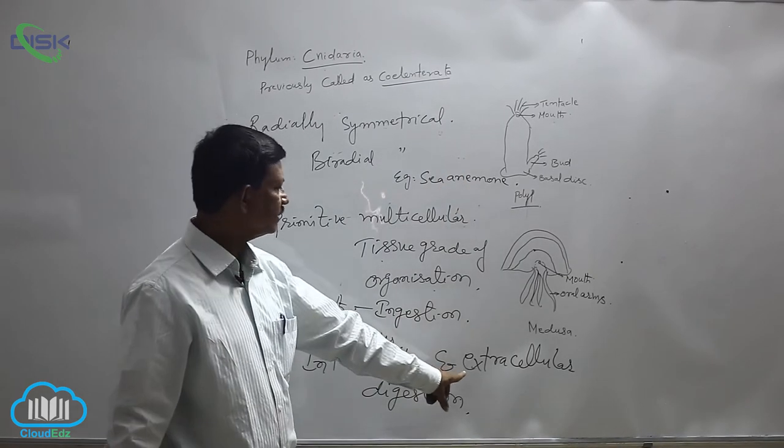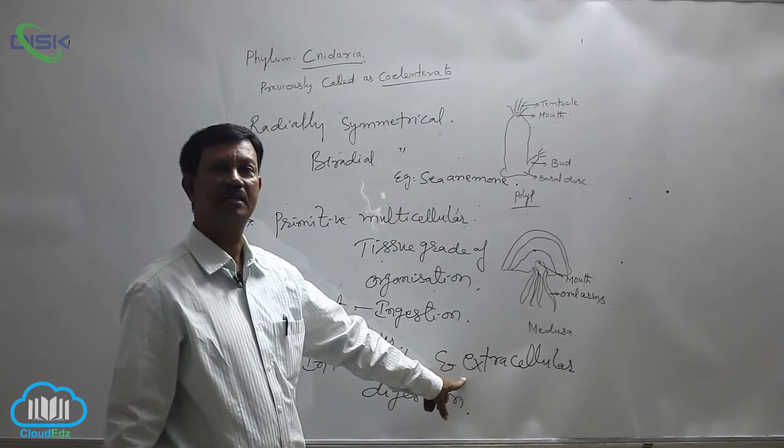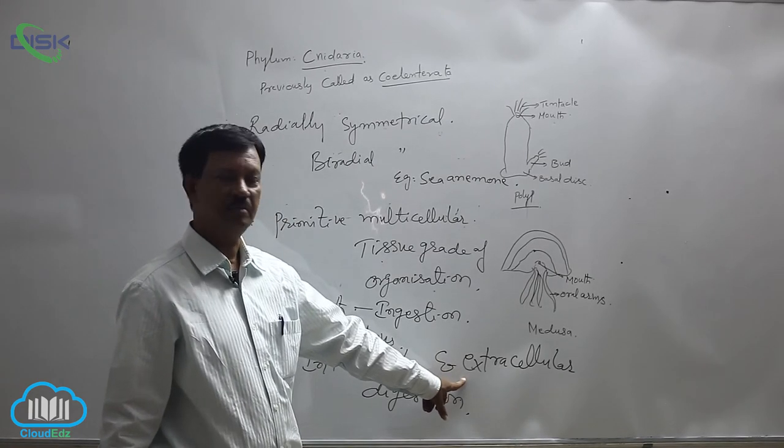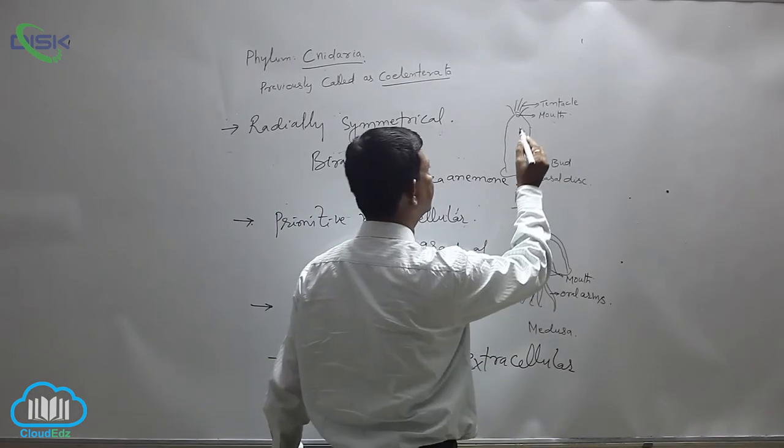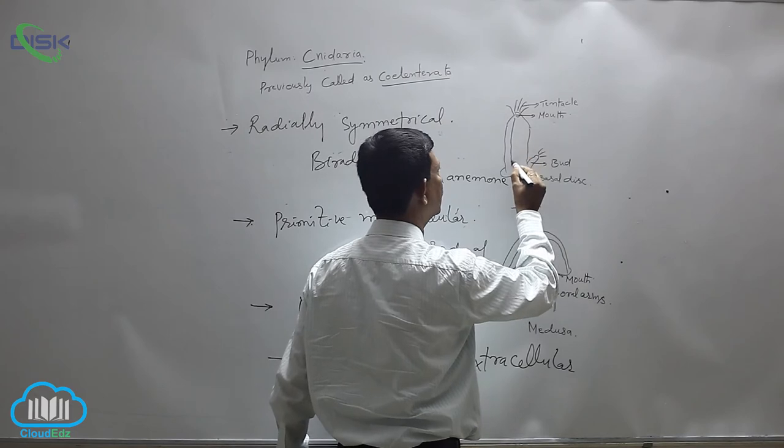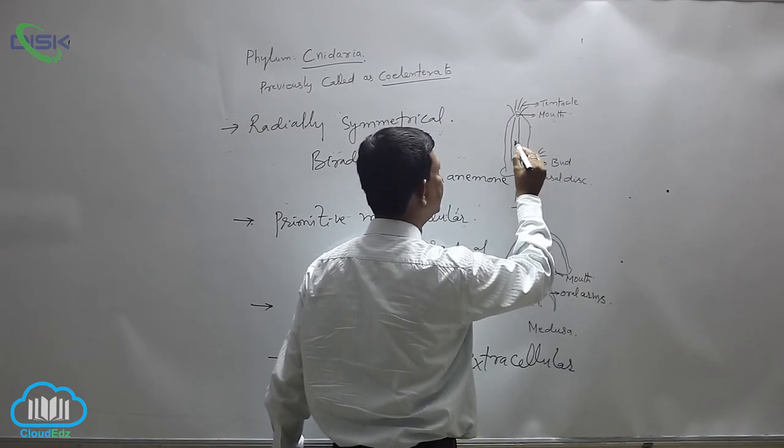And extracellular type of digestion is present in higher animals, which animals possess alimentary canal. Here partially digested food material enters into the middle cavity, which is known as the coelenteron.